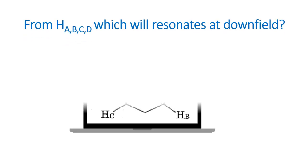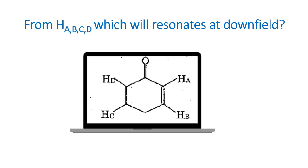The question says: from HA, HB, HC, and HD, which will resonate at downfield? So there are four protons spelled out here, and the question is which of them will be seen most at downfield — in the sense, which is the most deshielded among them.